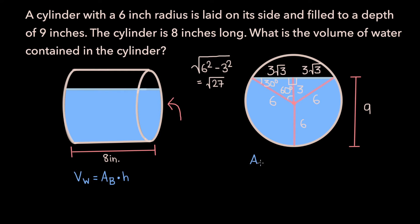Now the area of just the triangle is 1 half base times height. The length of the base is 3 root 3 plus 3 root 3, so 6 root 3, and the height is just 3. So 1 half times 6 root 3 times 3, which is 9 root 3.